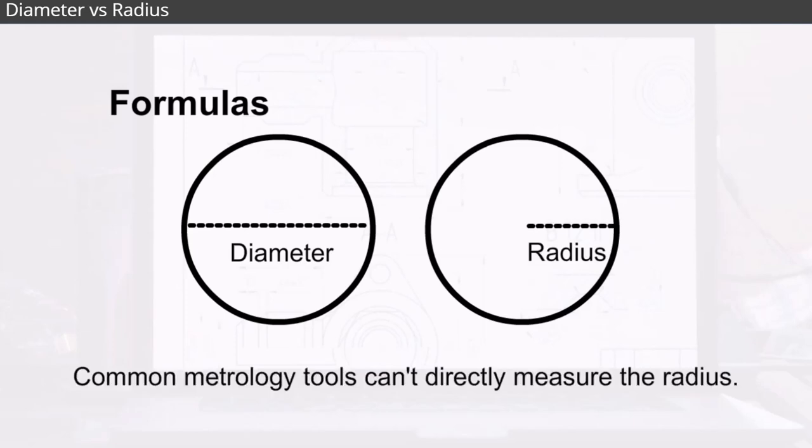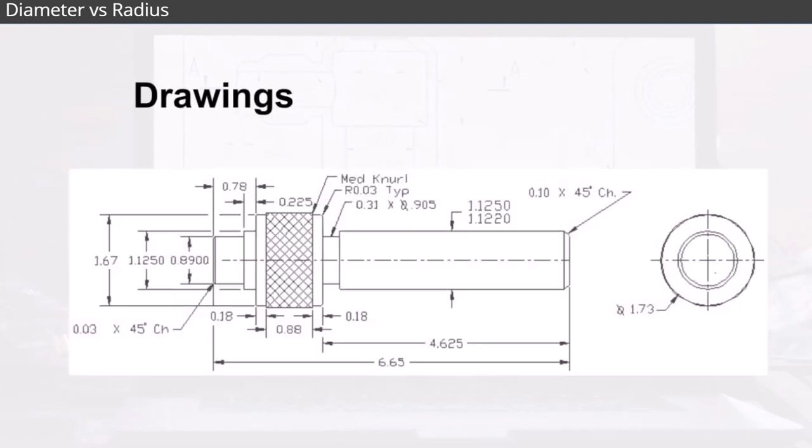We do this because common metrology tools can't directly measure the radius. Also, drawings typically dimension the diameter, and not the radii, of circular, cylindrical, and conical features. For those reasons, and because of some tolerancing issues, metrologists often work with diameters when doing calculations.